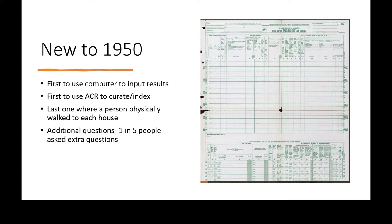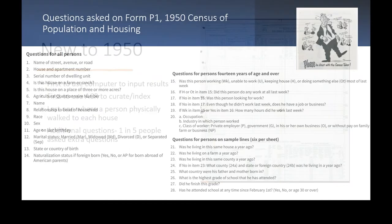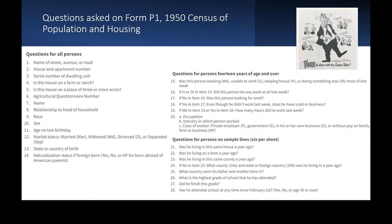It's the last census where a person physically walked to each house. In 1960, they did mailing and walking, but 1950 was the last year everyone went out and canvassed the areas. Additionally, there were supplemental questions — in the 1940 census every 14 people, but in 1950 one in five people, so on every fifth line, every single person was asked supplemental questions.